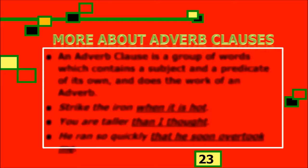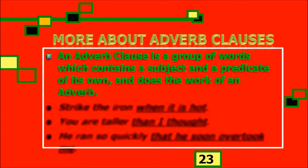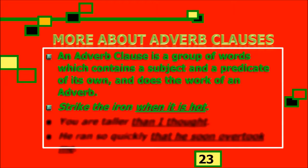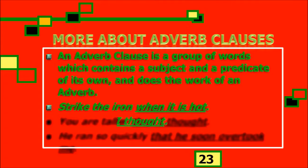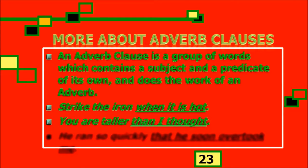An adverb clause is a group of words which contains a subject and a predicate of its own and does the work of an adverb. For example: 'Strike the iron when it is hot.' The subordinate clause 'when it is hot' does the function of an adverb — it contains a subject and a predicate of its own. Another example: 'You are taller than I thought' — this part is also considered an adverb clause.